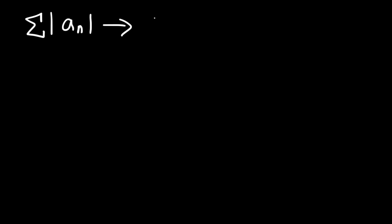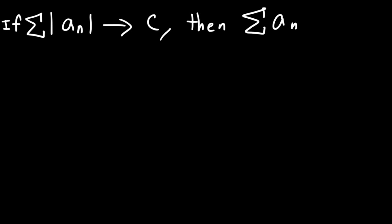So how do we use this in a problem? The first thing you want to do is determine if the absolute value of the series converges. If it does, then the original series converges as well, and we say that the original series is absolutely convergent.